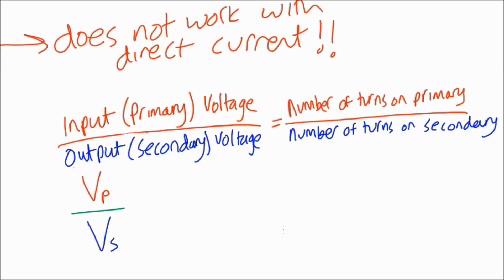We could rearrange that - or write it out in symbols. So VP over VS equals NP over NS, or we could rearrange it to give us VP over NP equals VS over NS. Either of those will be fine and will be able to help you.